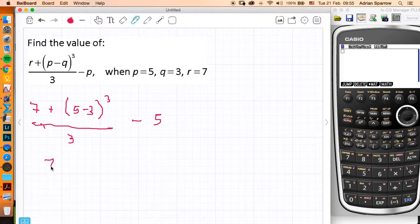So I want to do this first, so it's going to be 7 add 2, so I've done the bracket, then I'm going to cube it. This is 8, so it gives me 7 add 8, it's 15 over 3.